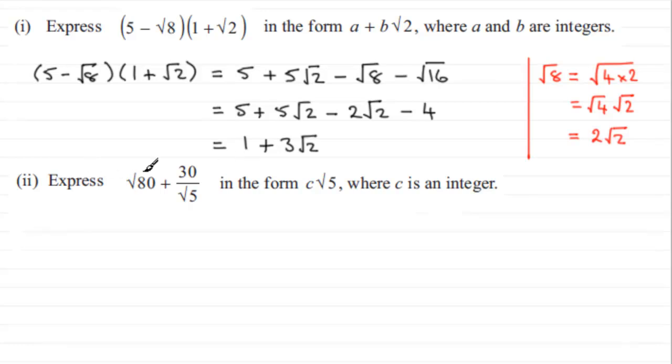That's the first part. Now for the second part, we've got to express √80 + 30/√5 in the form c√5, where c is an integer. Again, I want to copy down our question: √80 + 30/√5. The clue here is that we've got to break it down into terms with √5.